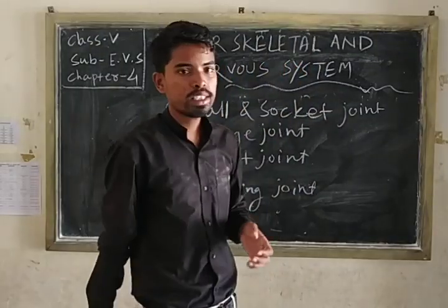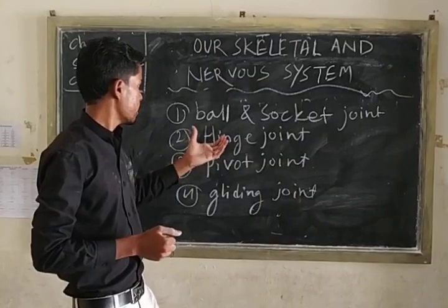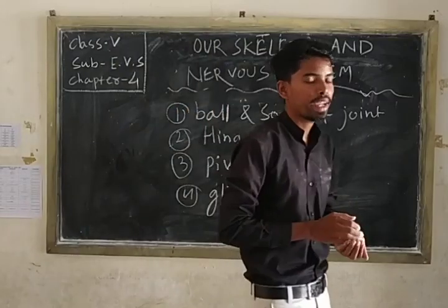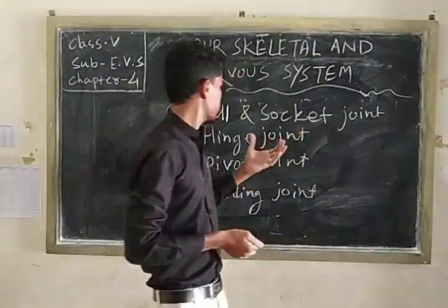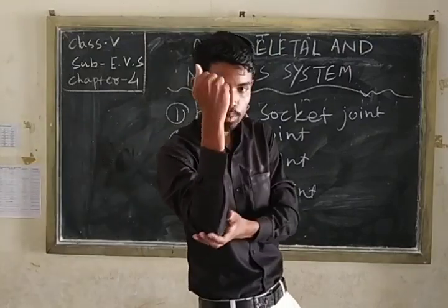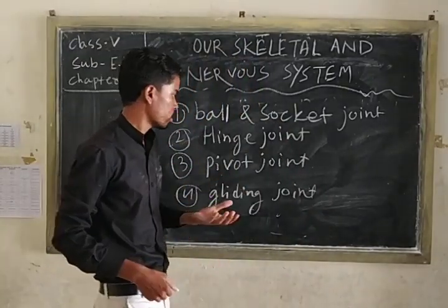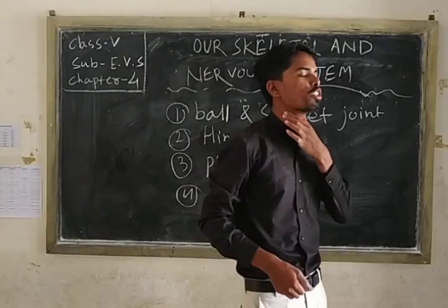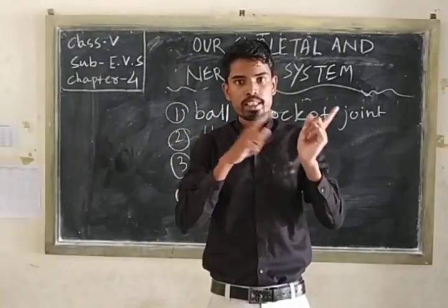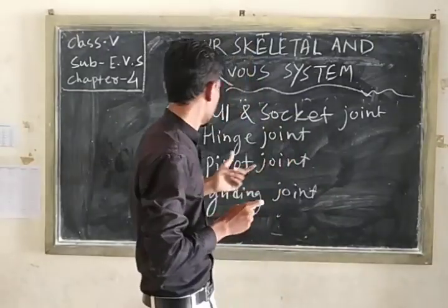The second type is the hinge joint. It allows movement of back and front only. An example is the elbow joint. Third is the pivot joint, found in our neck region, which allows us to move both side to side and up and down.